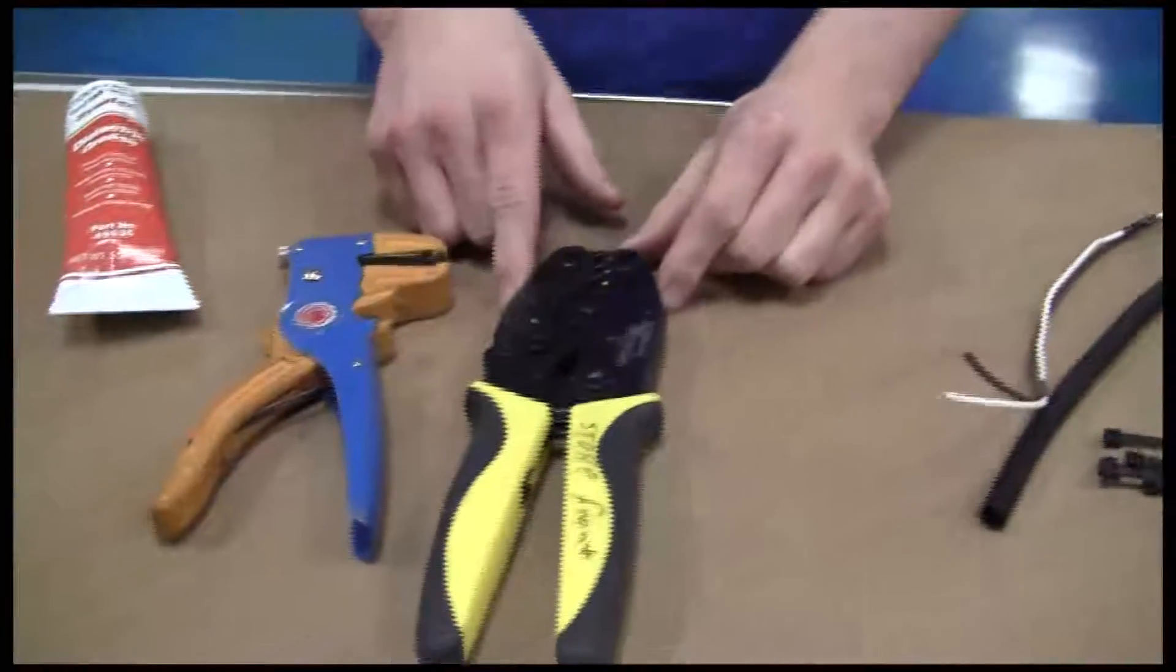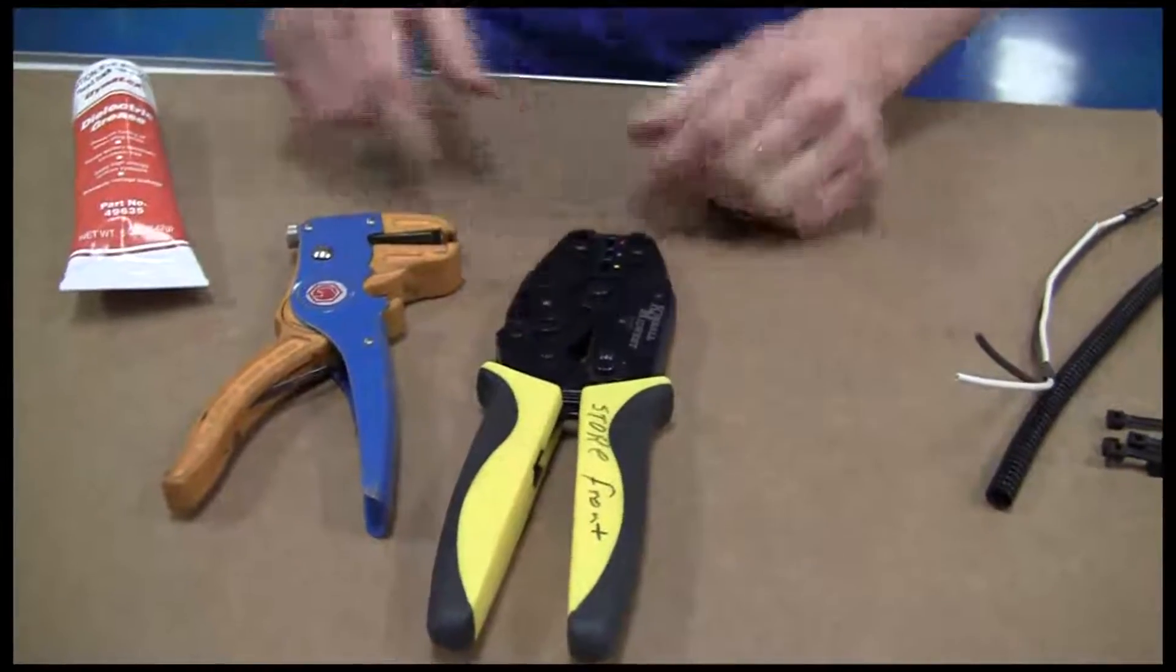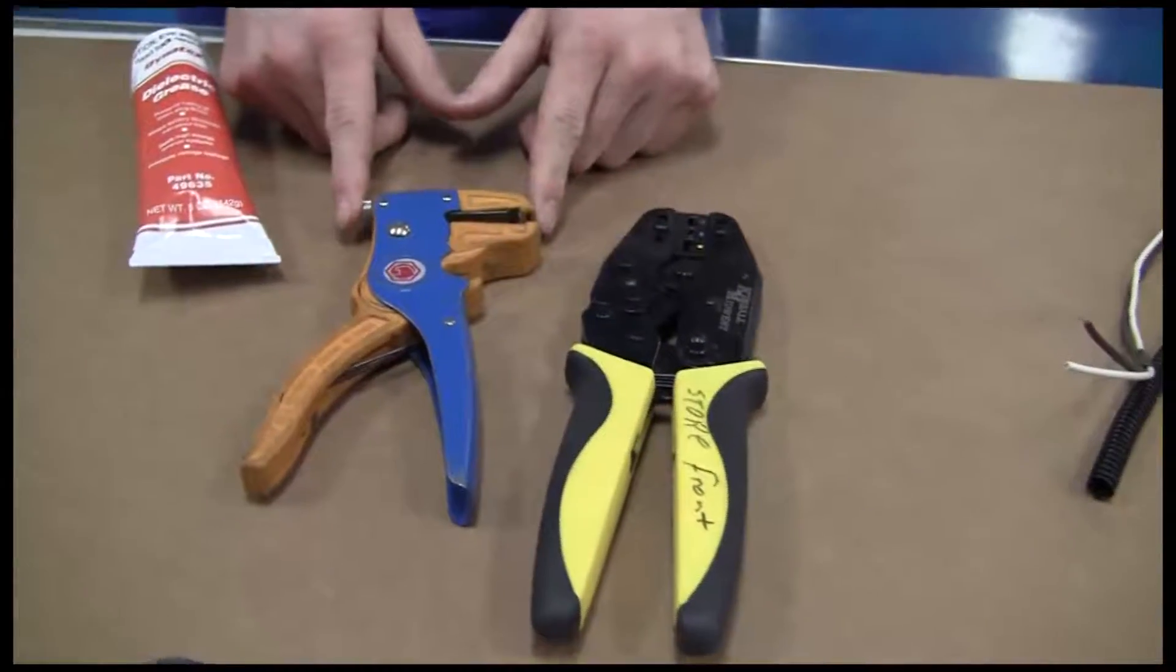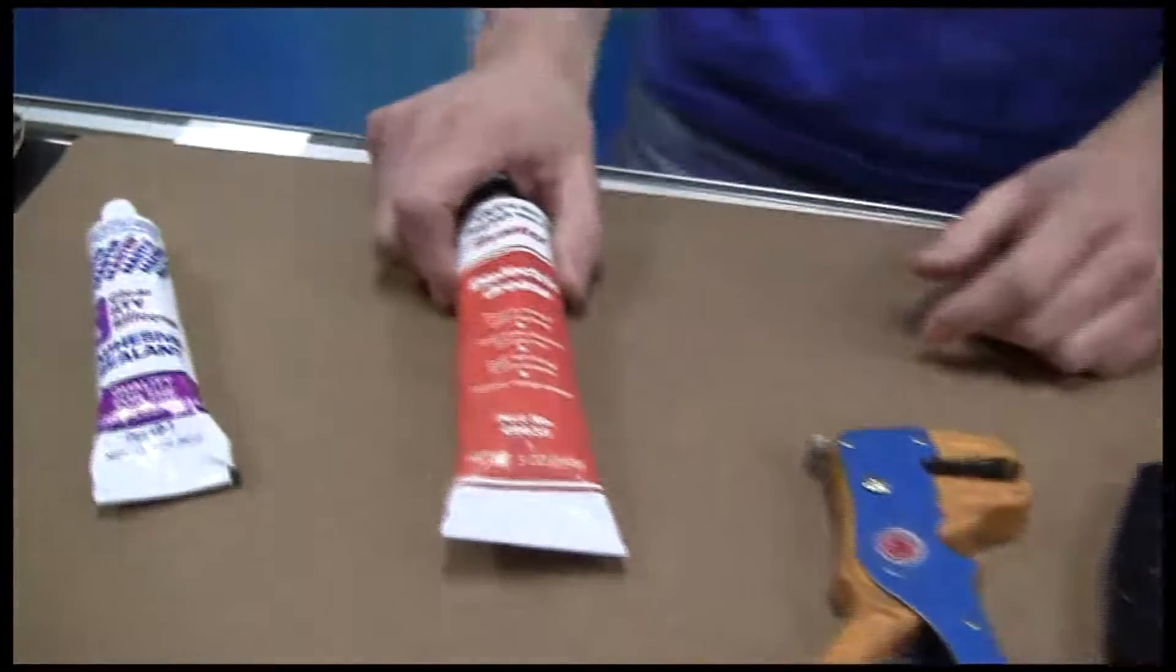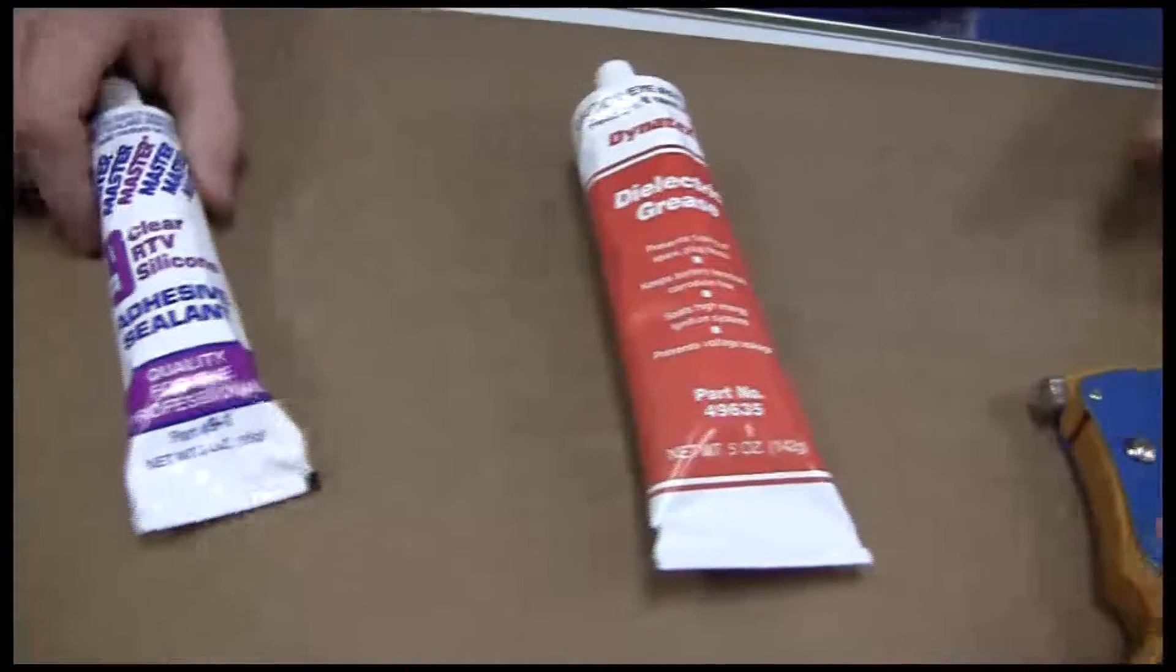I also have some crimpers, some strippers, a bottle of dielectric grease, and some silicone.